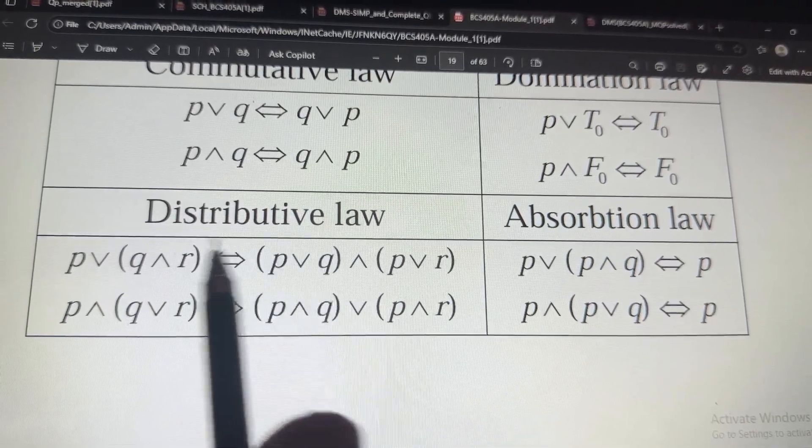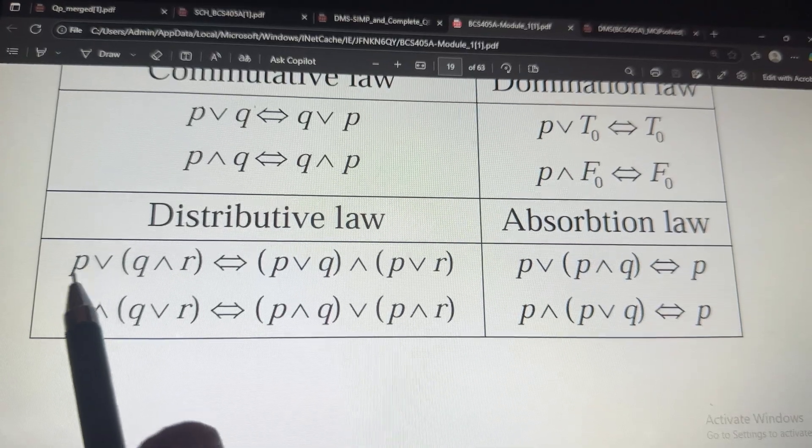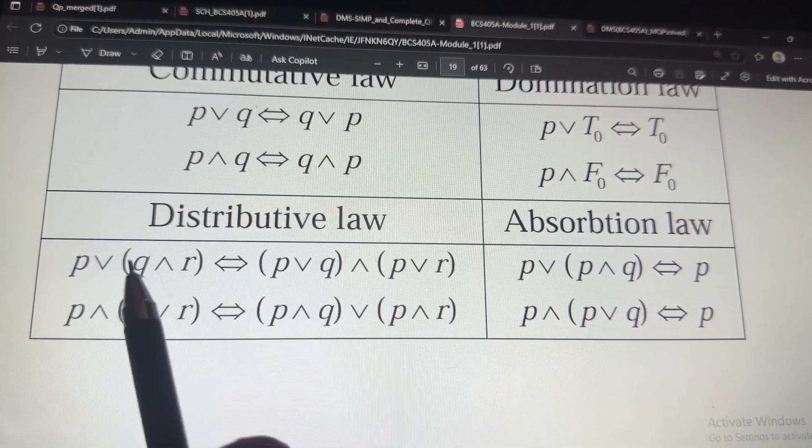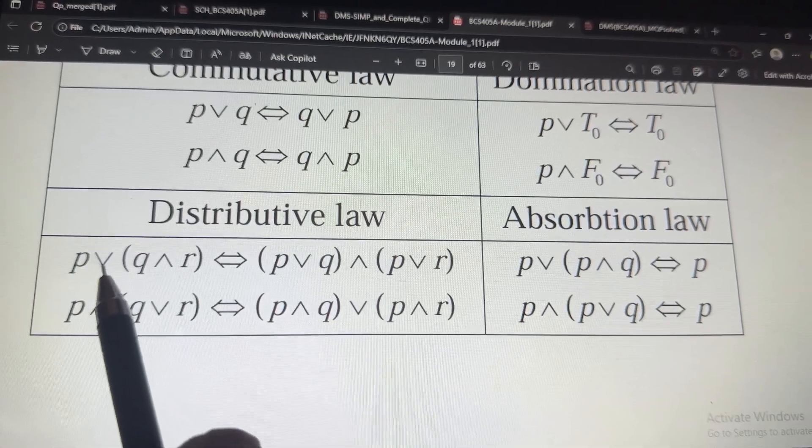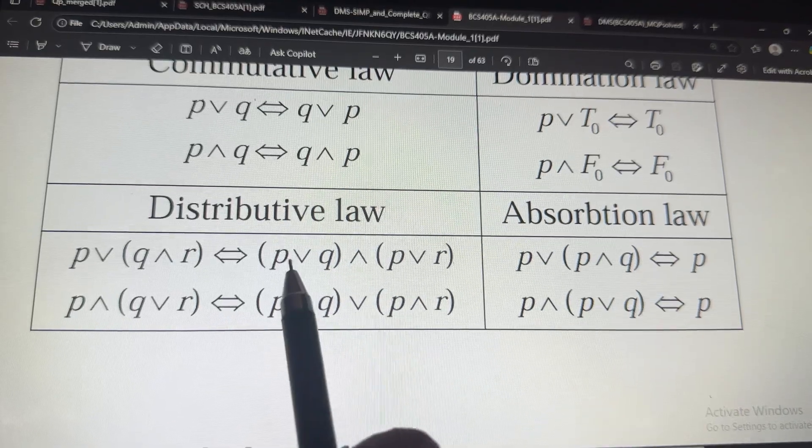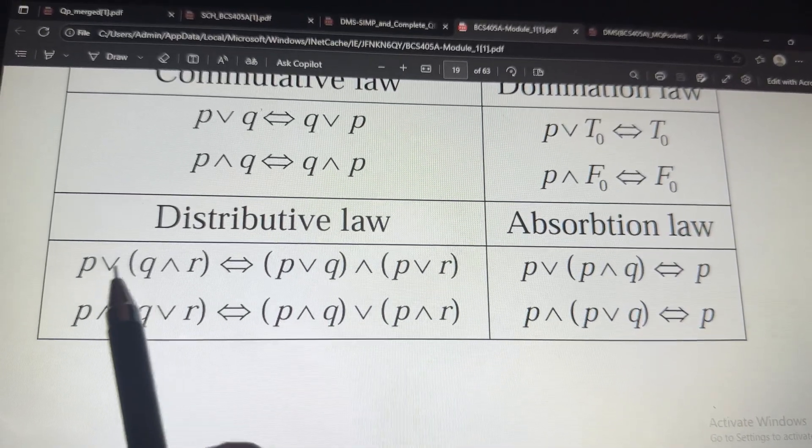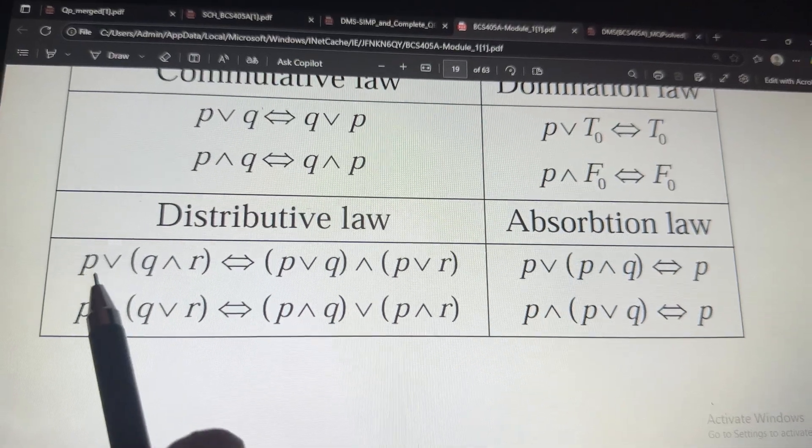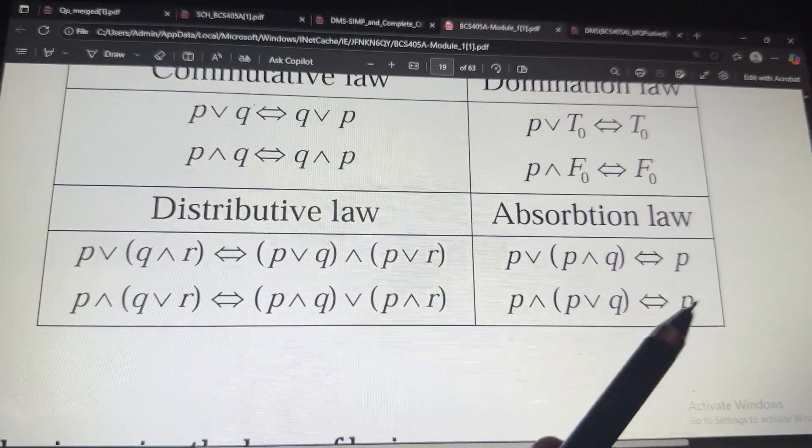Simple again. So, P, just you multiply the P with Q and later P with R. And write this symbol only here and in between you apply and. So, P or Q and P or R.